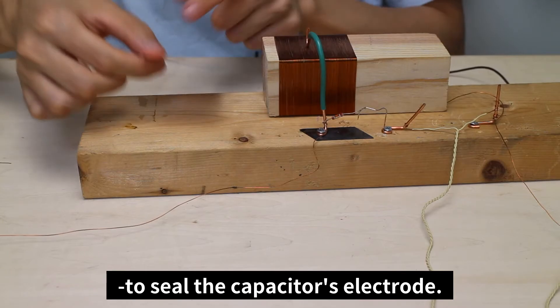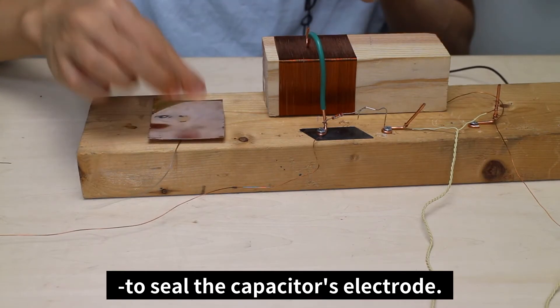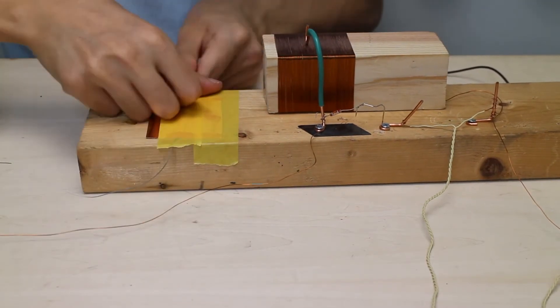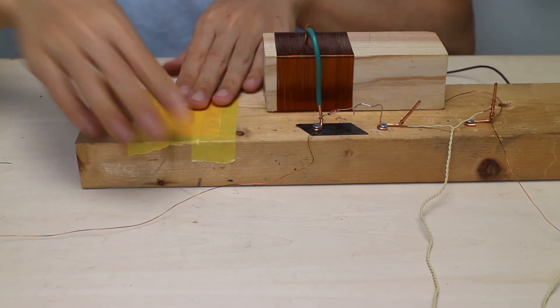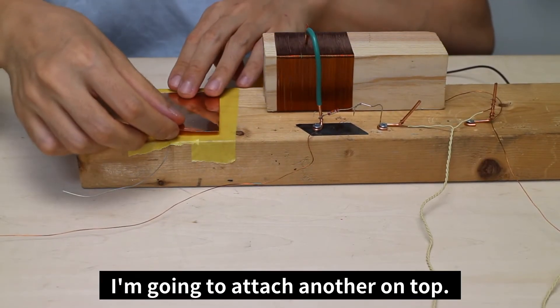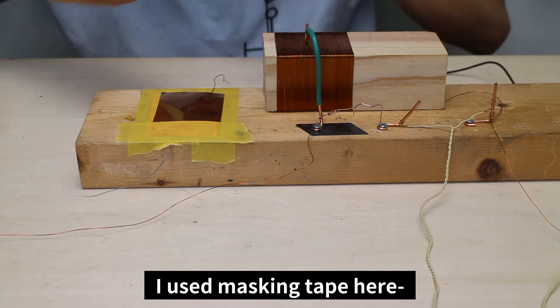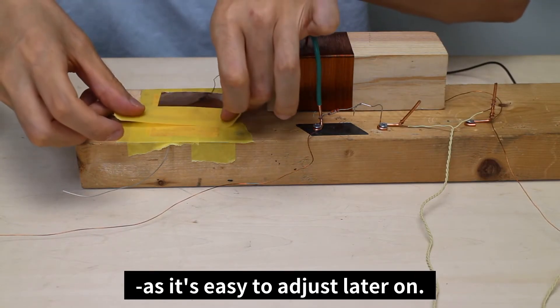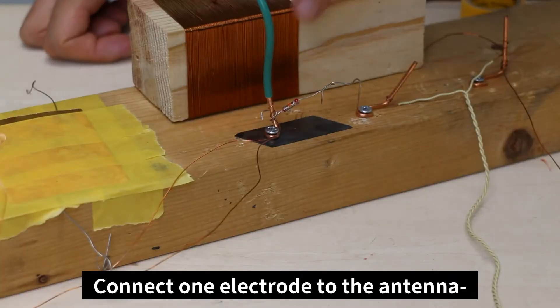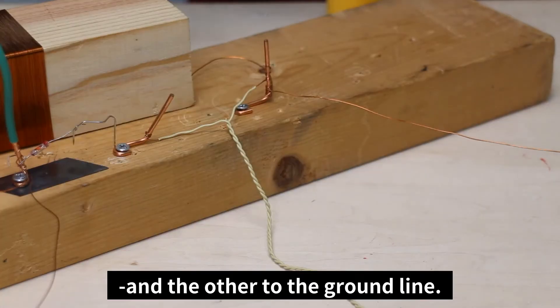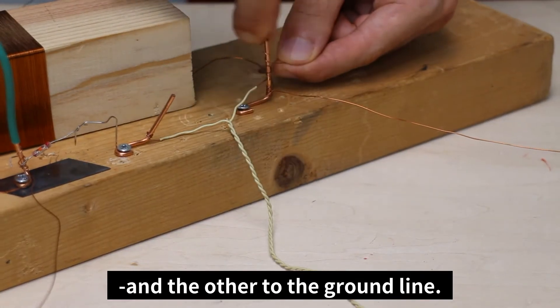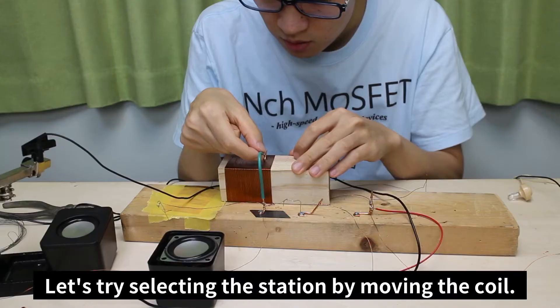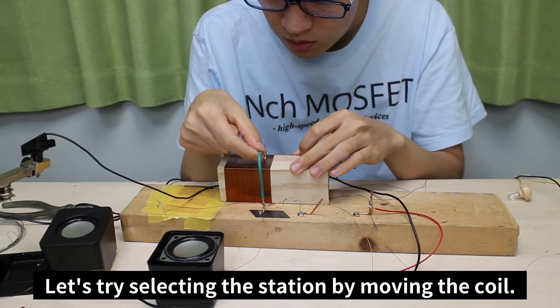We're going to use this open area to seal the capacitor's electrode. And I'm going to attach another to the top. I used masking tape here, so it's easier to adjust later on. Connect one electrode to the antenna and the other to the ground line. Let's try selecting the station by moving the coil.